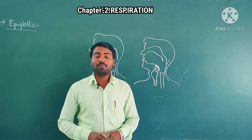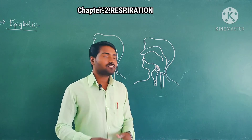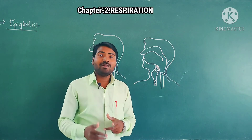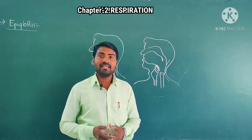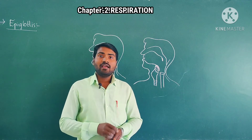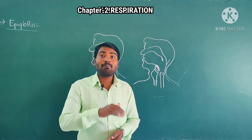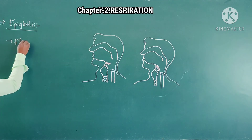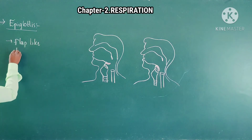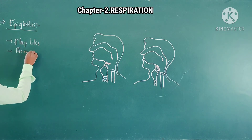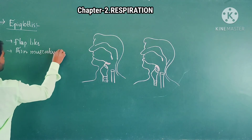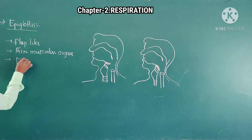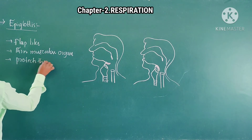Now let us discuss about the structure of the epiglottis and its role in respiration. The epiglottis is a thin flap-like muscular organ, which protects the glottis.